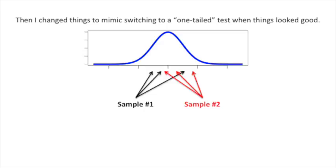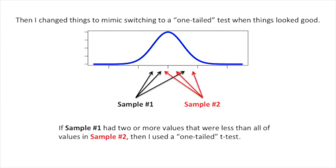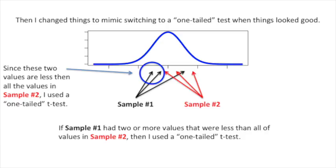Then I changed things to mimic switching to a one-tailed test when things looked good. If sample number 1 had two or more values that were less than all of the values in sample number 2, then I used a one-tailed t-test. Since these two values are less than all of the values in sample number 2, I used a one-tailed t-test on this dataset.